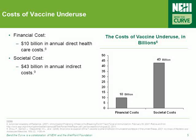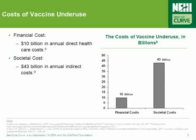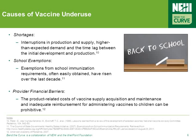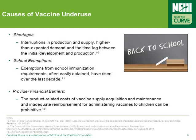The underuse of vaccines costs the healthcare system significant amounts of money — perhaps $10 billion a year in direct healthcare costs, and another $43 billion a year in indirect costs. The causes of vaccine underuse are complex and systemic, resulting from shortages, exemptions from vaccine requirements, provider financing issues, and health disparities.